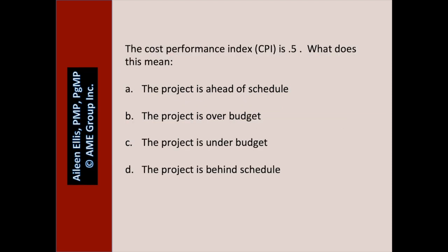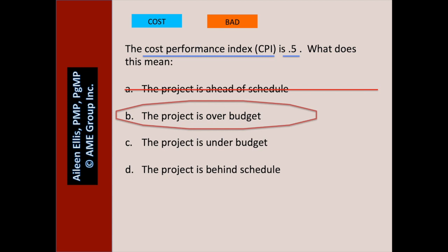The cost performance index is 0.5. What does this mean? Pause the video and answer the question. I ask first: are we talking about cost or schedule? We're talking about cost. And 0.5 — is that a good or bad number? It's a bad number. A: the project is ahead of schedule — we don't know because we don't have the schedule performance index. B: the project is over budget — B is definitely true. C: the project is under budget — definitely false. D: the project is behind schedule — we don't know because we don't have the schedule performance index.